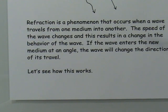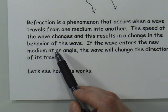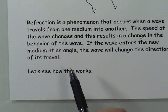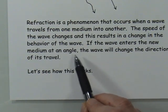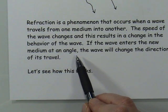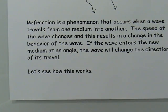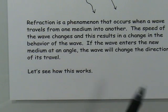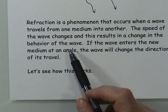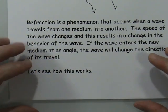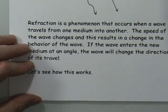Because waves change their speed when entering a new medium, it changes some of the other behavior of the wave — and we're going to take a look at that behavior in this video. In the next video, we'll look at the change in angle, which is a change in the direction the wave is traveling. But right now we're going to focus on what happens to the actual wave itself: the frequency and the wavelength. How are they affected by refraction?